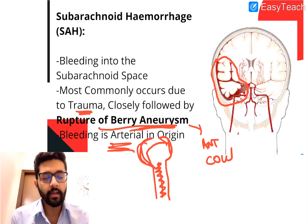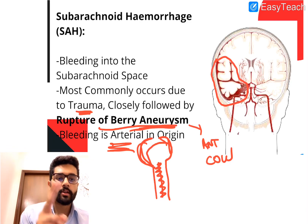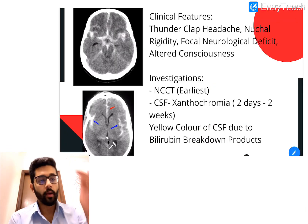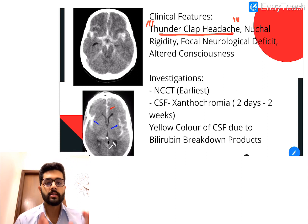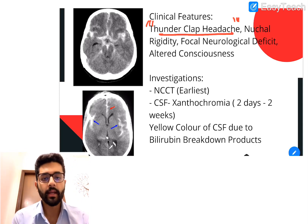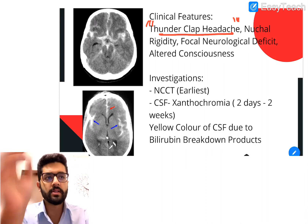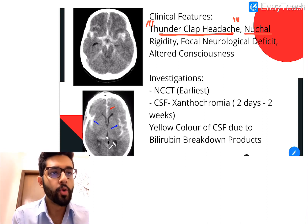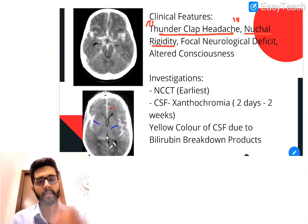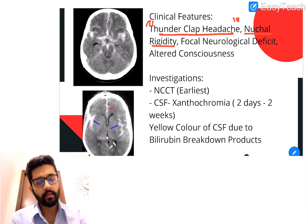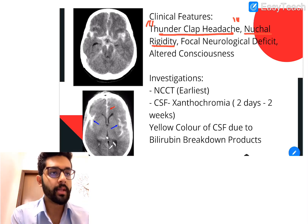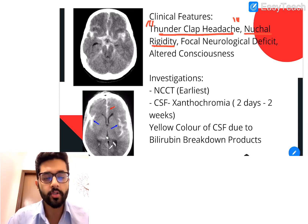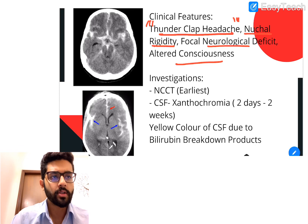SAH is frequently associated with rupture of arterial berry aneurysms and trauma. Remember: EDH is arterial, SDH is venous, and SAH is also arterial in origin. The classic clinical feature is a thunderclap headache — the patient says it is the worst headache of their life. There can also be nuchal rigidity, similar to meningitis, because blood in the subarachnoid space irritates the meninges, along with focal neurological deficits and altered consciousness.